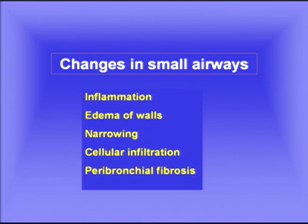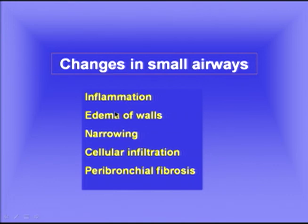It's very important to realize that in chronic bronchitis there are also important changes in the small airways — in fact, that is probably where the first changes occur, since pollutants tend to deposit in the small airways. Histological pictures show that in the small airways of people with chronic bronchitis there is inflammation, edema of the airway walls, narrowing of the airways, cellular infiltration, and peribronchial fibrosis. The changes in the small airways are critically important.